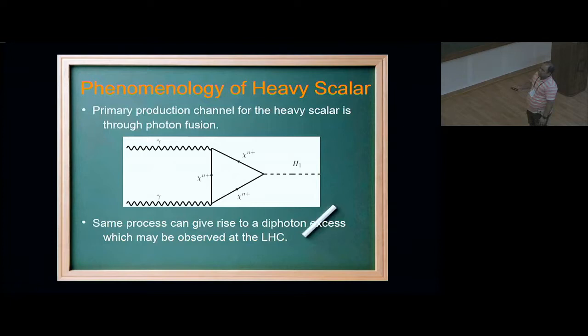Now let me talk about the phenomenology of the heavy scalar in the model. An interesting mechanism that happens here is the production of the heavy scalar through photon fusion. The parton density of the photon in the proton is well known. This photon coming from the proton through this chi charged particle loop can give me the heavy singlet scalar. And similarly, this heavy singlet scalar can now decay through the same loop into two photons, giving a diphoton excess.